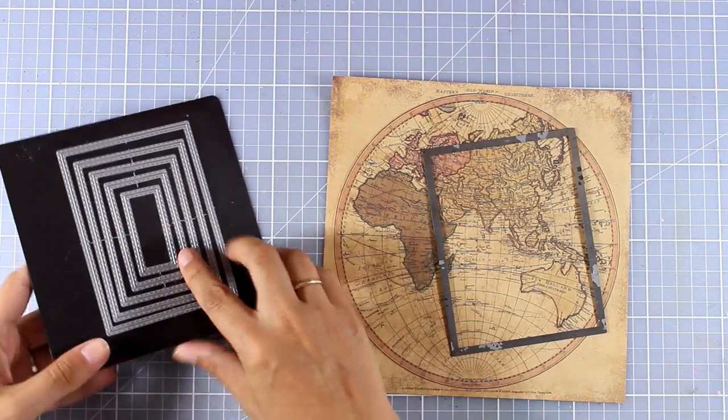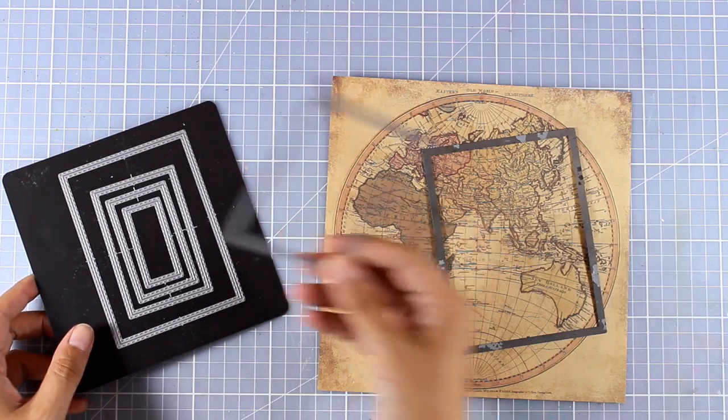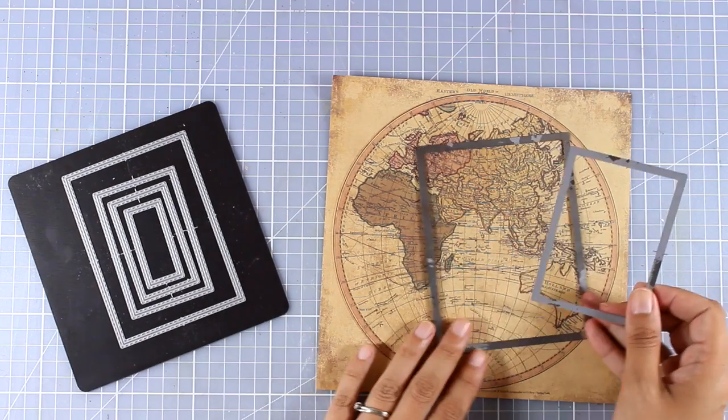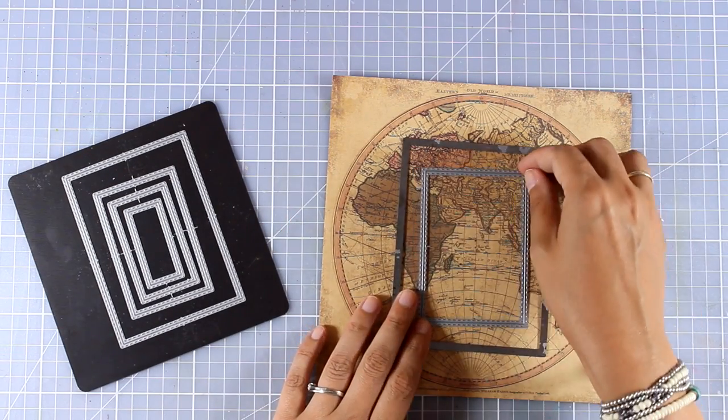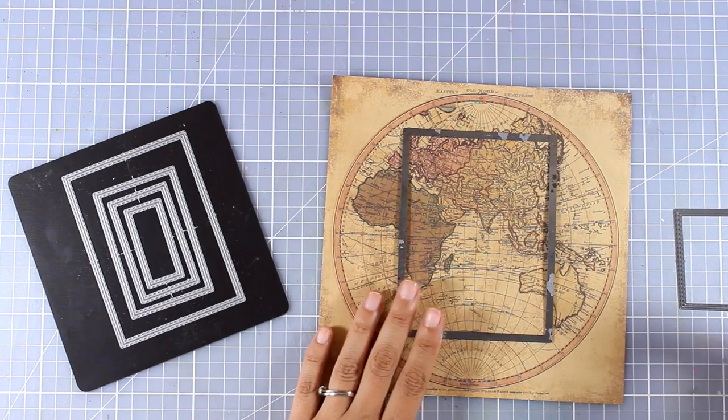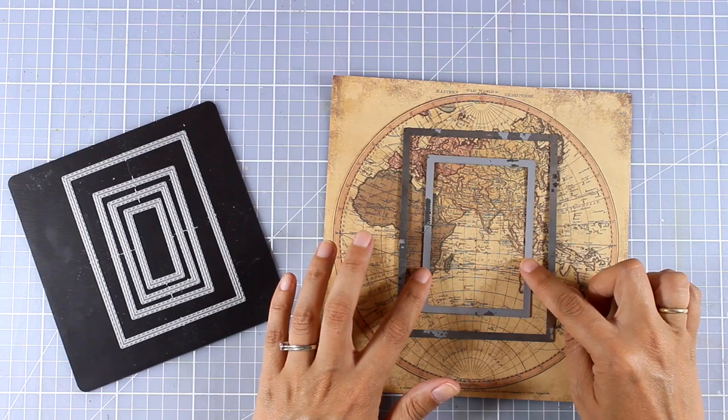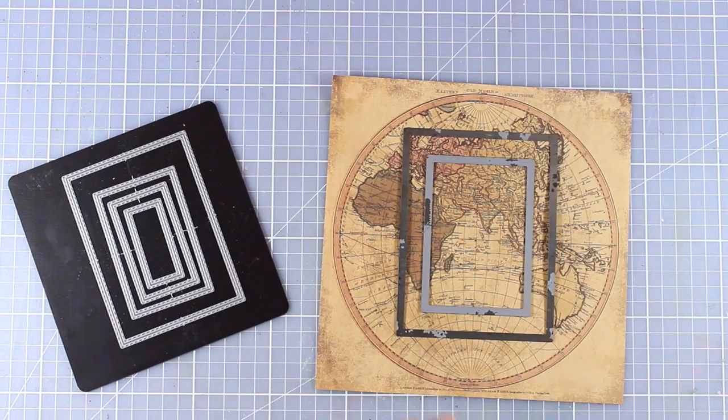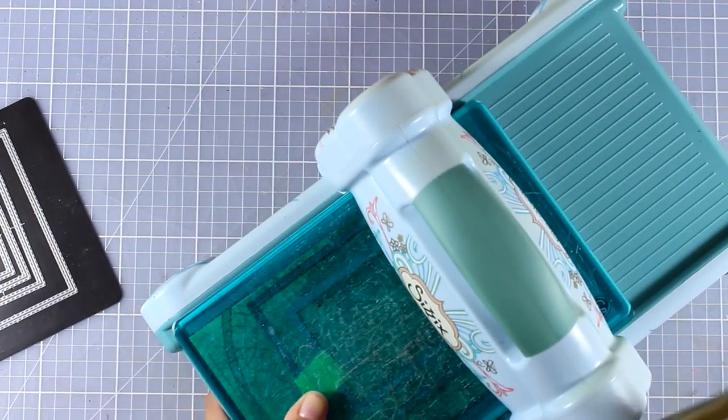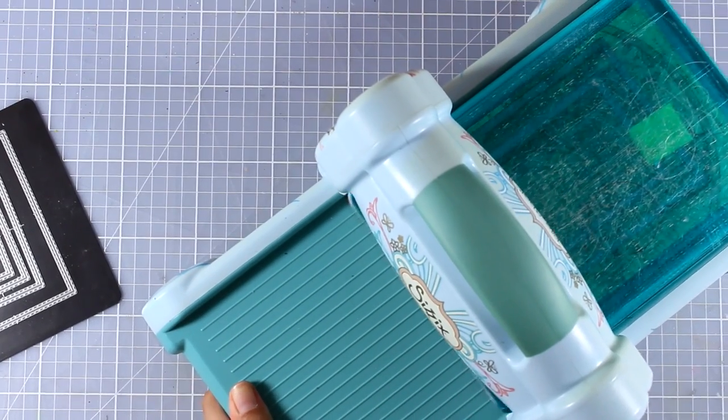Now out of this map I'm going to cut out a rectangle. For that I'm using my rectangle stitching dies. I'm going to place one inside the other so that I can create a frame. I'm going to place them down and secure them with some post-it tape, then run them through my die cutting machine.